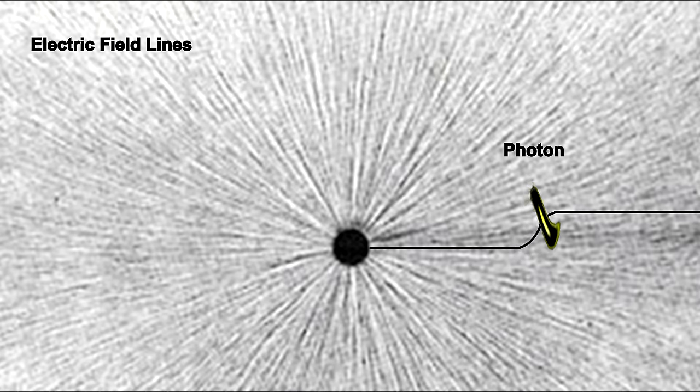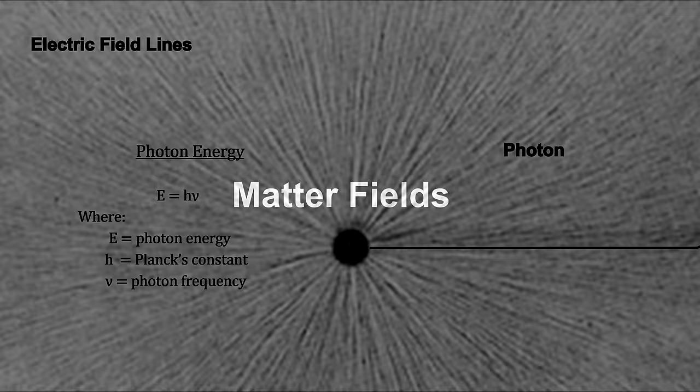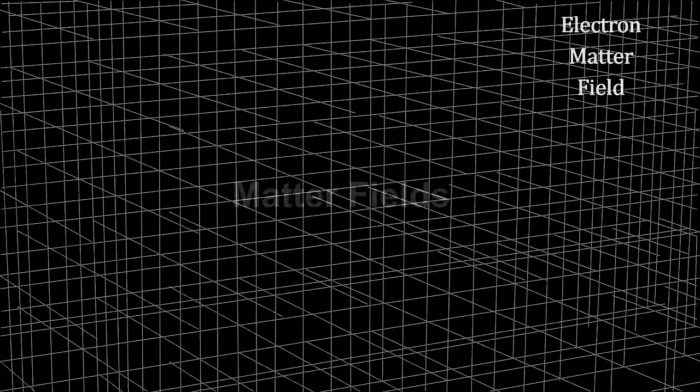The photon has no mass, no charge, a spin of one, making it a boson, and travels at the speed of light in a vacuum. In our segment on the atom, we saw that energy was quantized and equal to Planck's constant times the photon's frequency. Now we take a little leap.